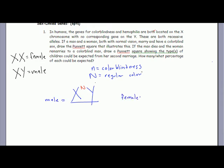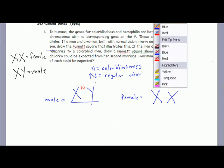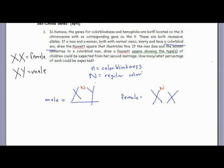It says that the woman with normal vision marries and they have a colorblind son. This is the key here - if they have a colorblind son, that must mean she must be heterozygous for colorblindness on her X chromosome. So keep this in mind.